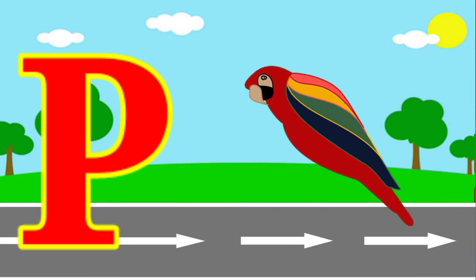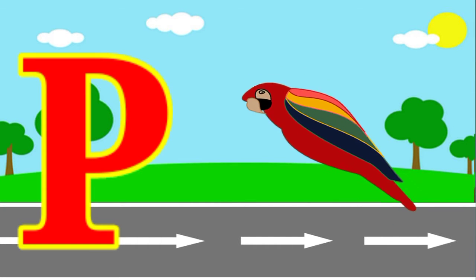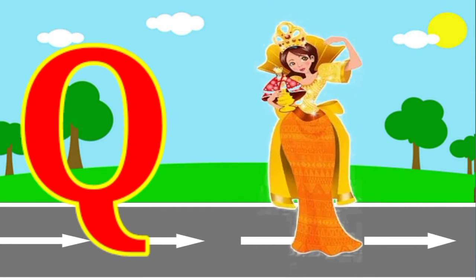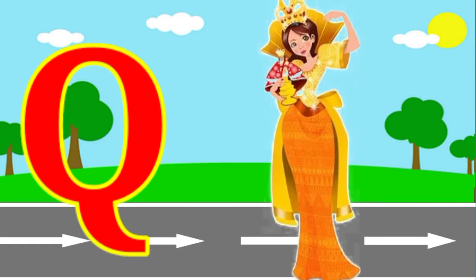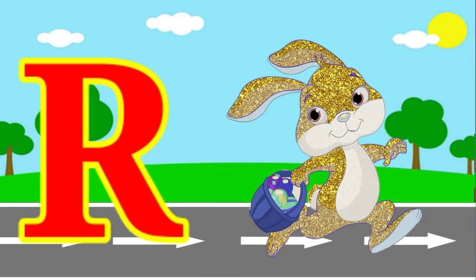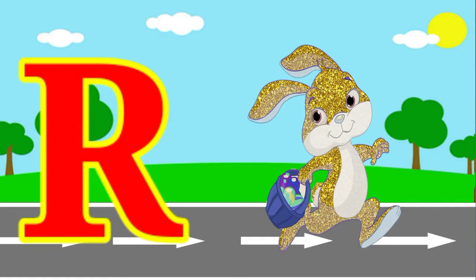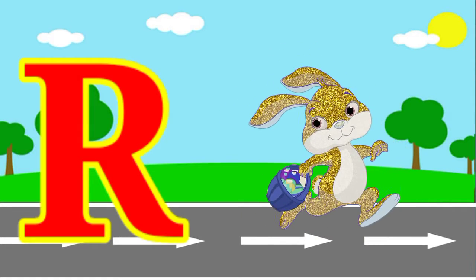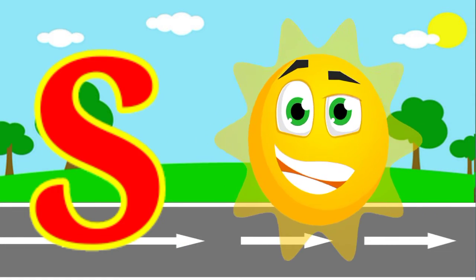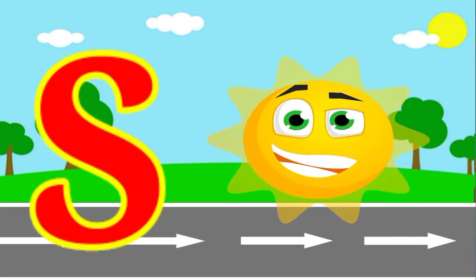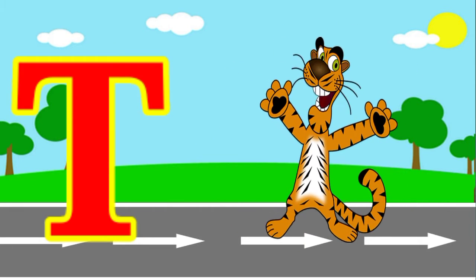B for Barret. K for Queen. R for Red. S for Sun. T for Tiger.